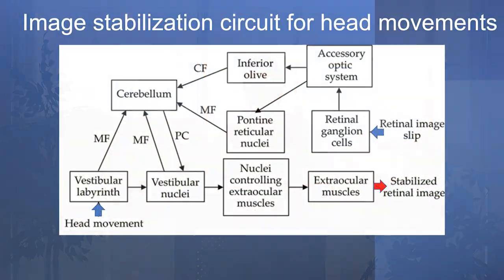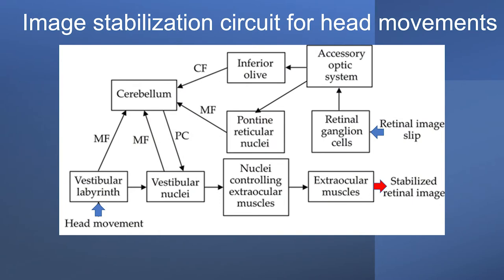This is the brain circuit underlying image stabilization. Retinal image slip is an important component computed by the retina and sent through retinal ganglion cells to different brain areas. That information is integrated with other sensory input like the vestibular system, which senses where your head is in space. Combining these signals and controlling the ocular muscles allows the eye to move with great precision and stabilize the image.